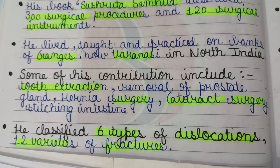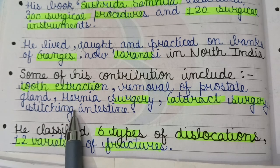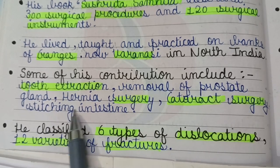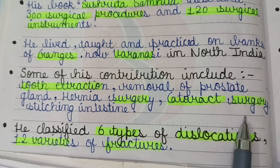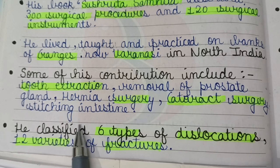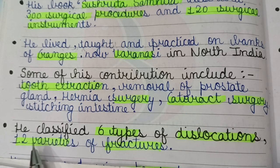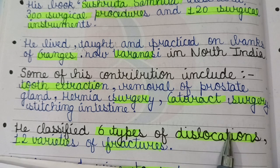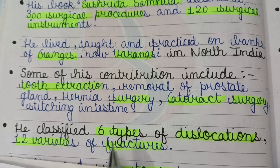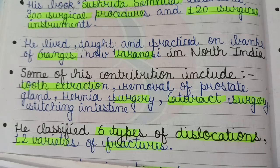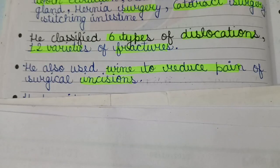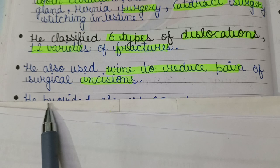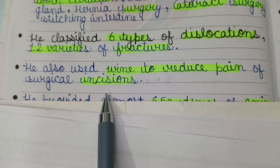Some of his contributions include tooth extraction, removal of prostate gland, hernia surgery, cataract surgery, and stitching of intestine. He classified six types of dislocations in the body and also 12 varieties of fractures. He also used wine to reduce pain of surgical incisions.